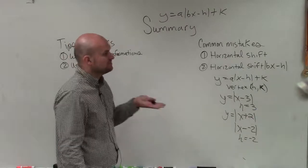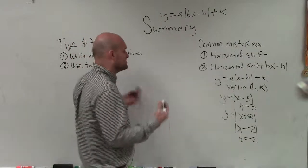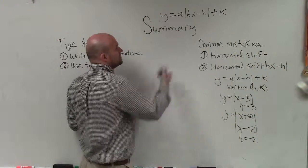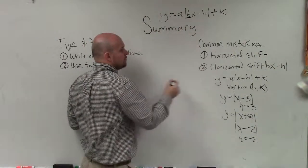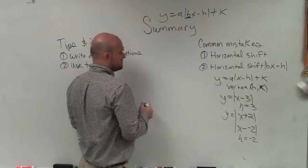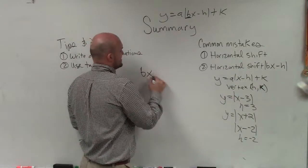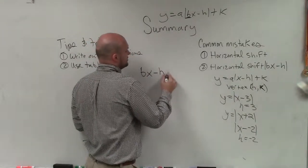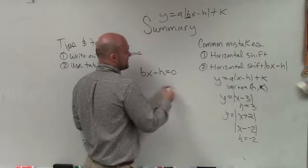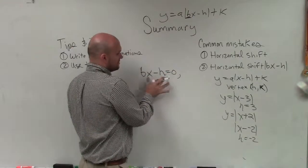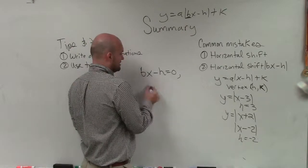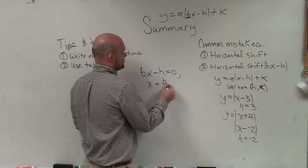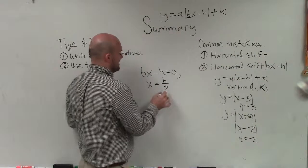The last thing is the horizontal shift of bx minus h. This gets a lot of students. The best thing I can tell you is, any time you have that b, that number is multiplying by your x, rather than h being a part of your vertex, you've got to set whatever's inside of your function, or inside your absolute value, set it equal to 0, and then solve for x, all right. So x equals h divided by b, h divided by b.